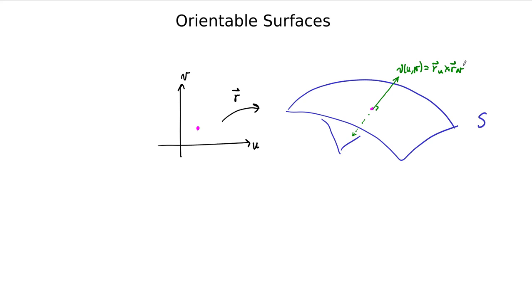We define this to be R sub U crossed with R sub V. And as you move from point to point, a couple things change about this normal vector. Number one, the normal vector's direction obviously changes, because as you move along a surface that's not flat, the normal direction is going to change.